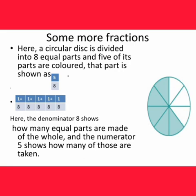Let's learn about some more fractions. Here a circular disk is divided into 8 equal parts and 5 of its parts are colored. That part is shown as 5 upon 8. Here the denominator 8 shows how many equal parts are made of the whole and the numerator 5 shows how many of those are taken.